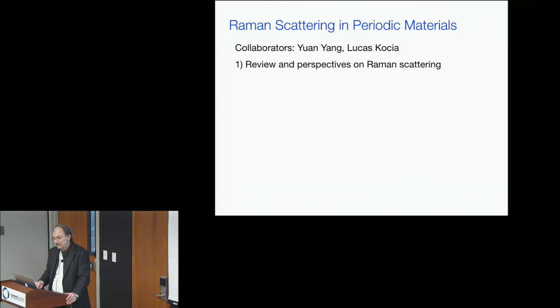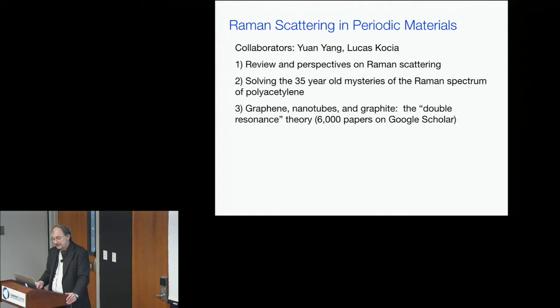I'm going to start with a review of Raman scattering and then tell you about this polyacetylene solution and then move on to graphene. This theory is called the double resonance theory. If you Google Scholar graphene, nanotubes, graphite, and double resonance theory, you'll get 6,000 papers on Google.